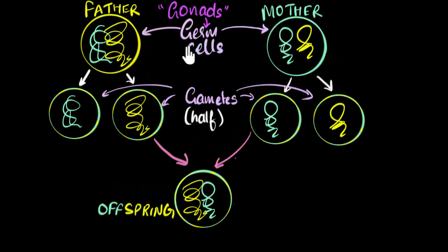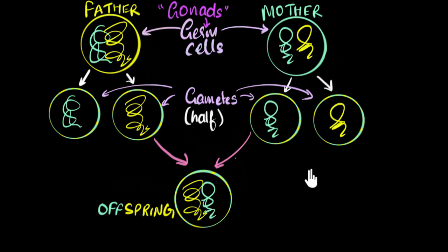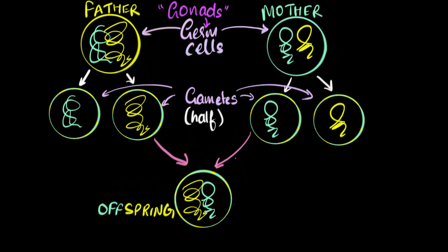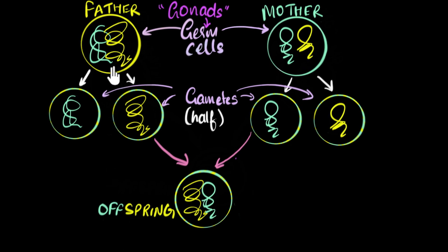If the parents decide to have another offspring, different gametes might end up fusing, which will produce yet another unique DNA combination. So even siblings will have different DNA content, and that's why usually they don't look identical even though they come from the same parents. Of course, identical twins are exceptional cases — we'll talk more about them when we discuss human reproduction later on.